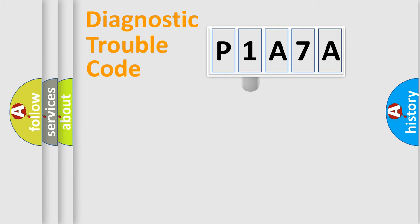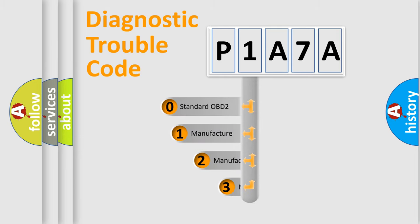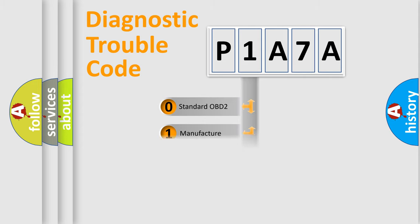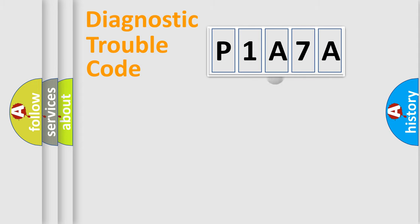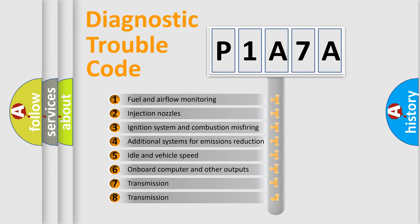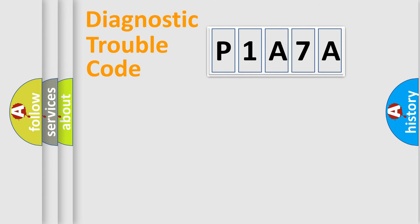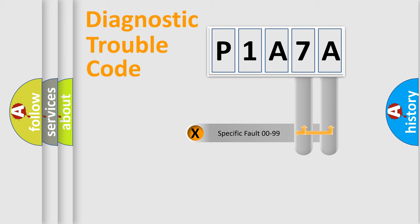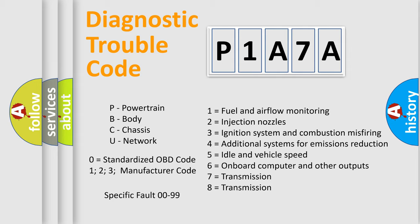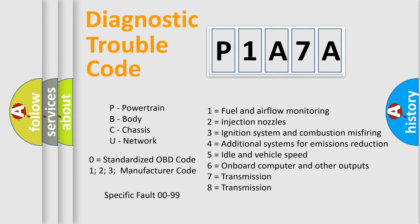This distribution is defined in the first character of the code. If the second character is expressed as zero, it is a standardized error. In the case of numbers 1, 2, or 3, it is a more manufacturer-specific expression of the error. The third character specifies a subset of errors. Only the last two characters define the specific fault of the group. This division is valid only if the second character is expressed by the number zero.